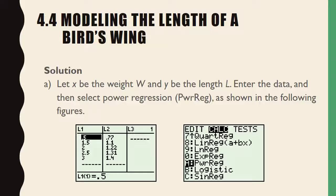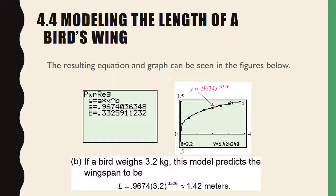Here you see putting the weight in list one for X and the length in list two for Y. Then you choose calculate and power regression. The equation is 0.967403648 times X to the 0.3325911232. You can graph both the equation and the data together. For a bird weighing 3.2 kilograms, go to calculate then value, type in 3.2, and that gives you the answer — which should be about 1.42 meters.